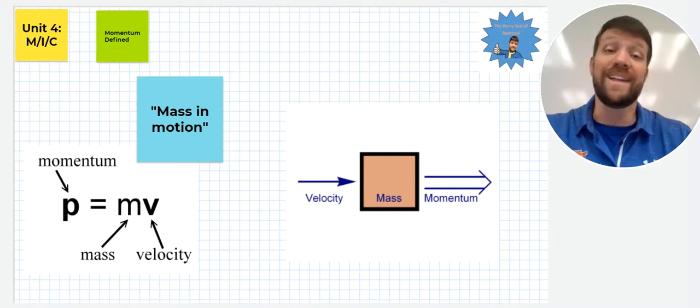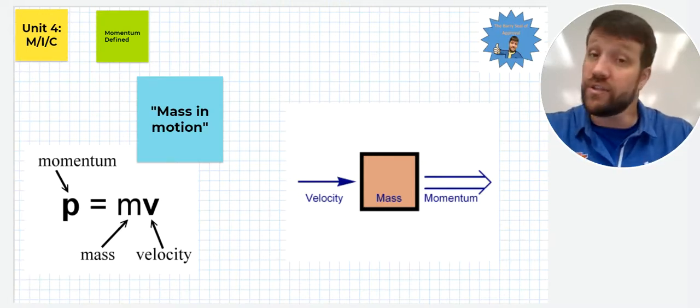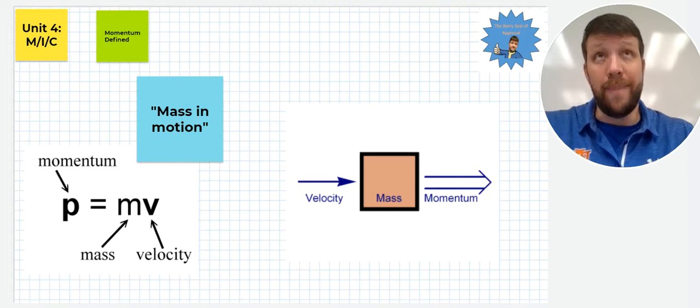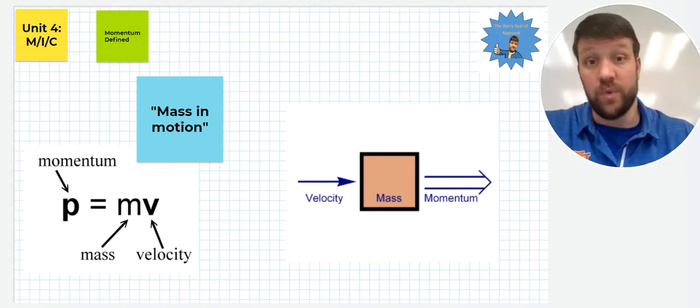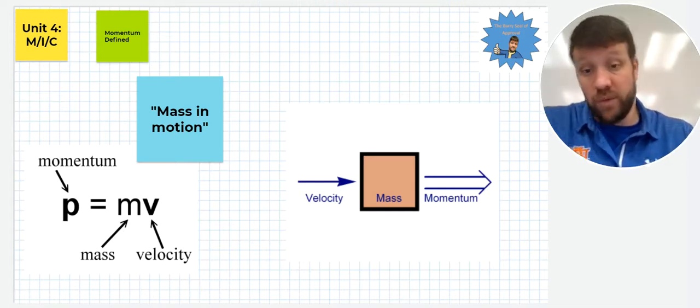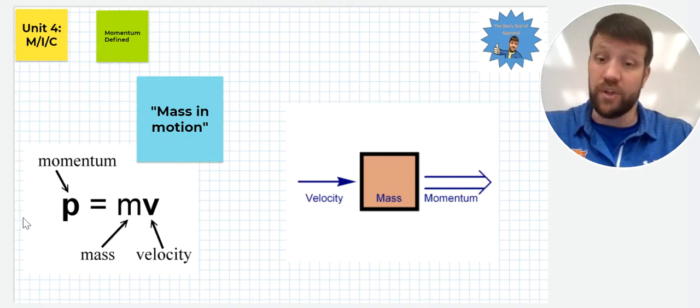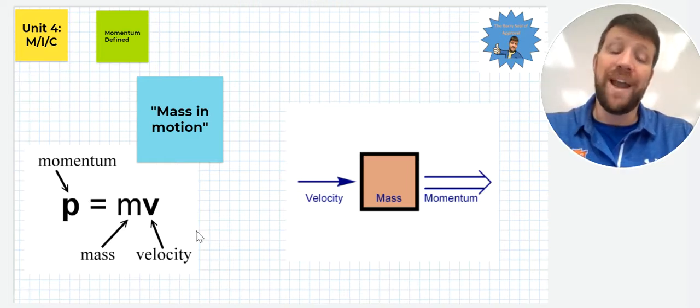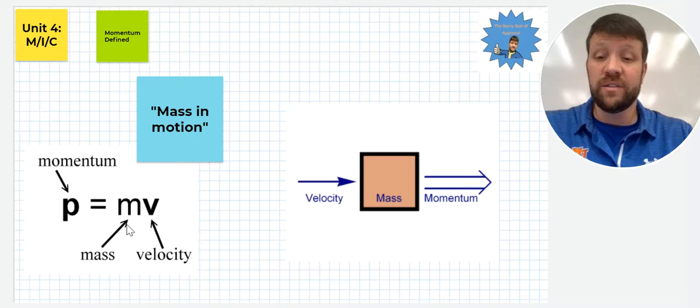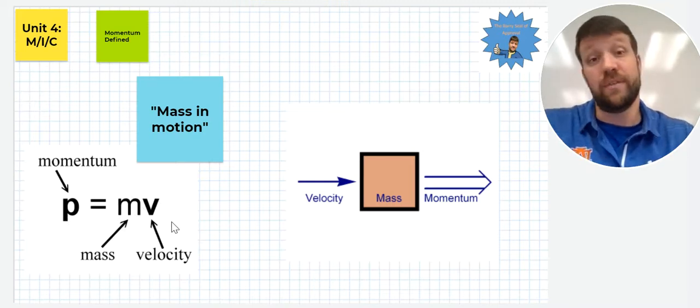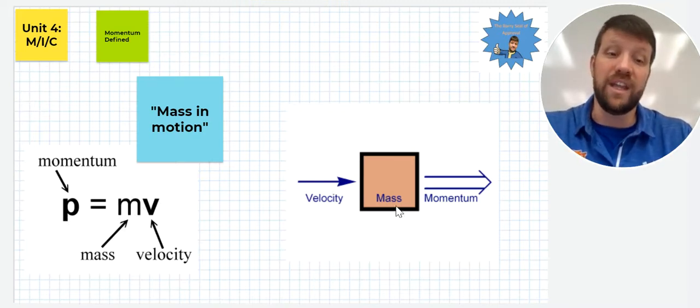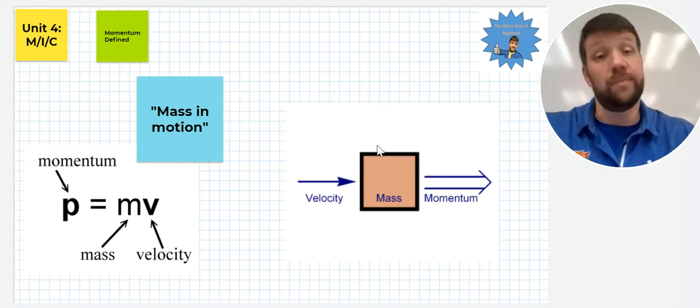We're going to start by defining momentum. Momentum is defined as mass in motion. When we think about that term, those three words together, mass in motion implies a mass with a velocity. That's exactly what we're looking at. So momentum, represented by P, is going to be mass M and motion V for velocity. When we have a velocity applied to a mass, we have momentum. Simple as that.